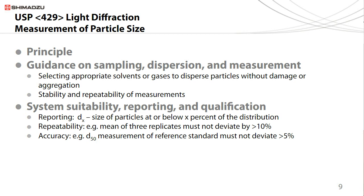For instance, a D90 of 20 microns would mean that 90% of the particles in a distribution are at or below 20 microns. Various repeatability and accuracy criteria can be established. The standard suggests that for the measurement of a central value — mean or median — the coefficient of variation should be less than 10%, and less than 15% for values at the edge of a distribution such as the D10 or D90. Since laser diffraction systems are based on physical principles, they're not calibrated per se with external standards, but their operation can be checked and qualified with standardized reference standards.